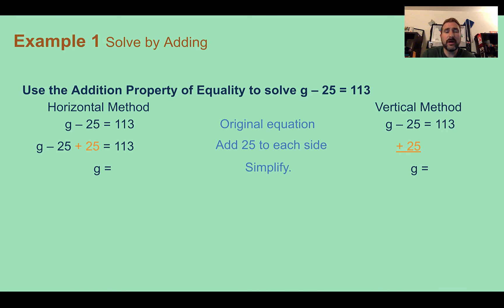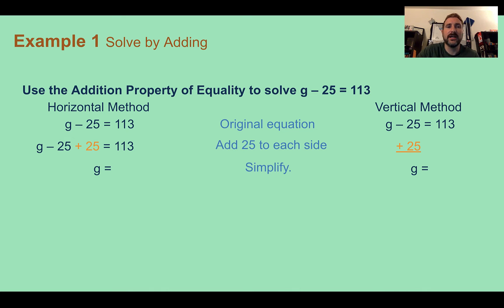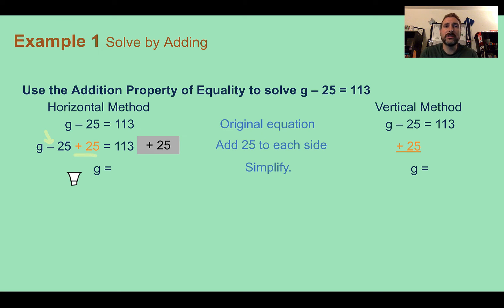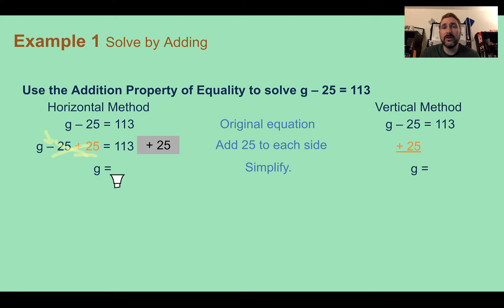Example 1: Solve by adding. Use the addition property of equality to solve g minus 25 equals 113. There are two methods: the horizontal method, where you write things out sideways, and the vertical method, where you work your way down. For the horizontal method, we start with our original equation and add 25 to both sides. We add 25 because that's the opposite of minus 25, which causes them to cancel out to 0 — using the additive inverse from a previous lesson — leaving g by itself.